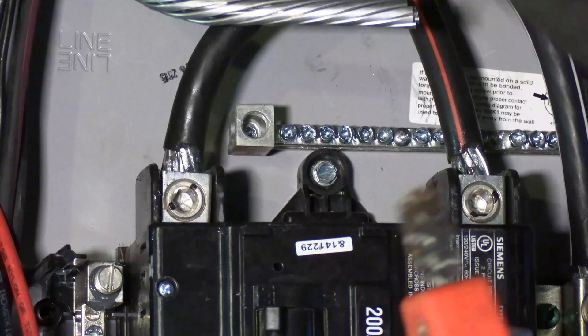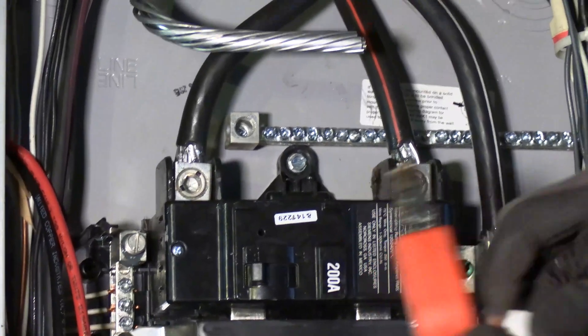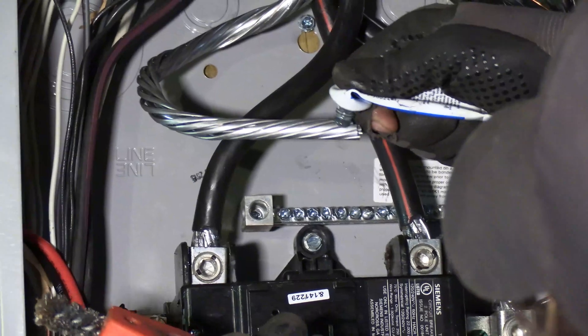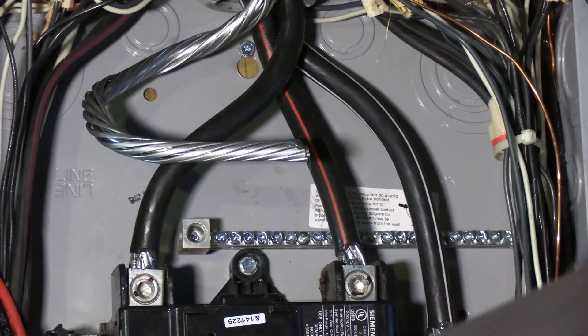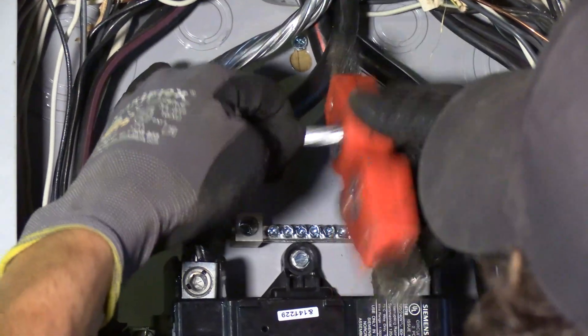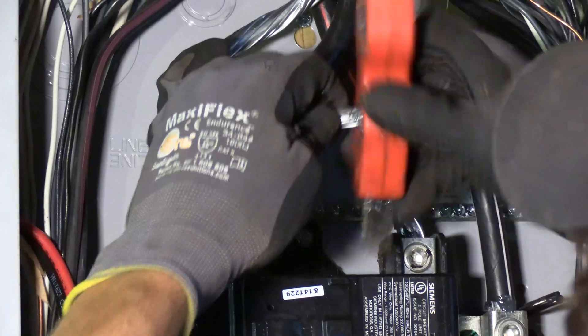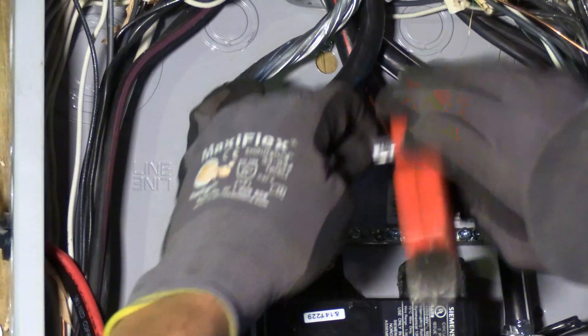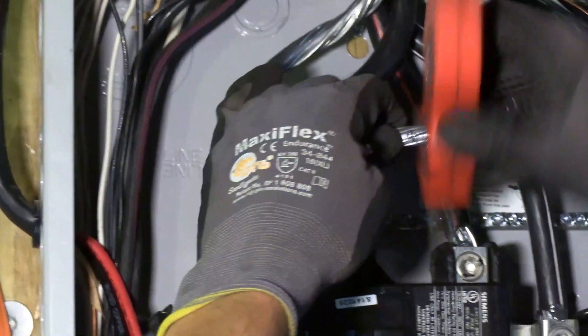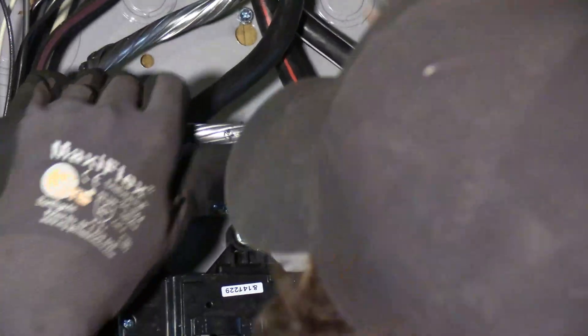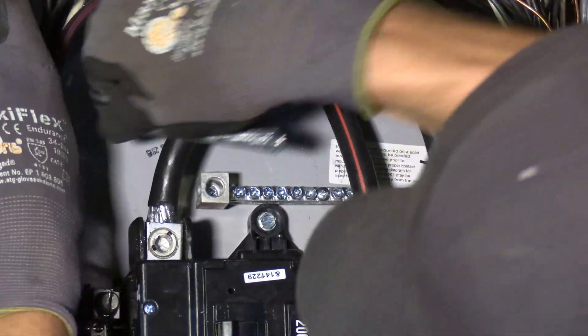Now when you're terminating aluminum conductors, one thing you need to know is that special measures are required. This is a nolox. It's a no aluminum oxidation. It's an anti-oxidation compound and it's required to be brushed into aluminum conductors. I'm just going to put it on the end, brush it into the point, wire brush it into the point of termination and that's going to prevent it from getting that white chalky high resistance oxidation.